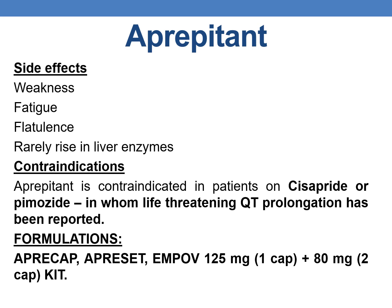Marketed formulations include Apricap, Apriset, and Emend, available as a kit of one 125 mg capsule plus two 80 mg capsules, because it must be given for 3 days. On the first day, 125 mg is given 1 hour after chemotherapy, followed by 80 mg on the second day and 80 mg on the third day.